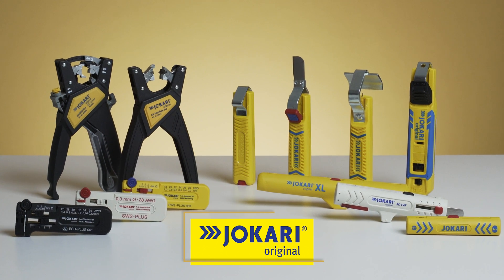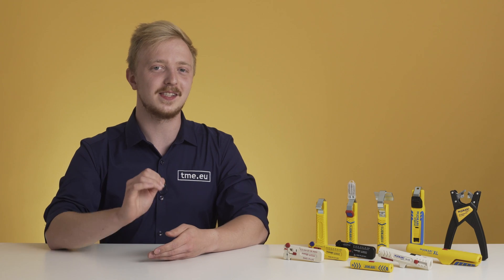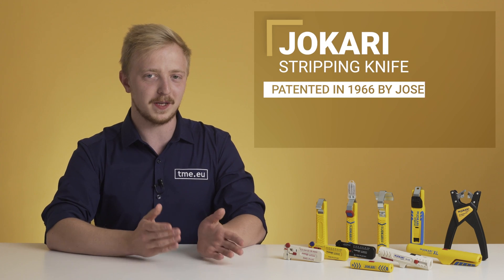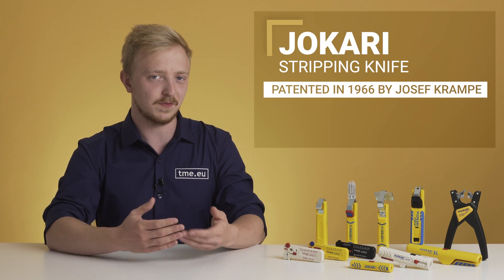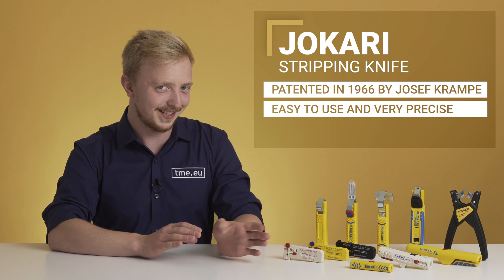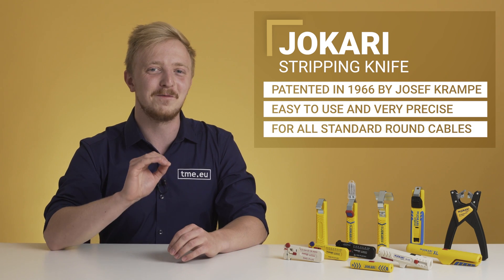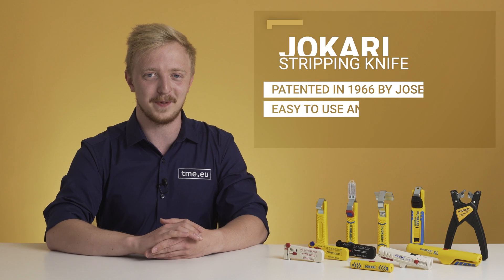Jokari is not only a name of a company from Germany. It's a synonym of an insulation cutting knife. A simple construction patented in 1966 by Josef Krampe was not appreciated at the beginning, but just a few years later the design was copied by other companies.